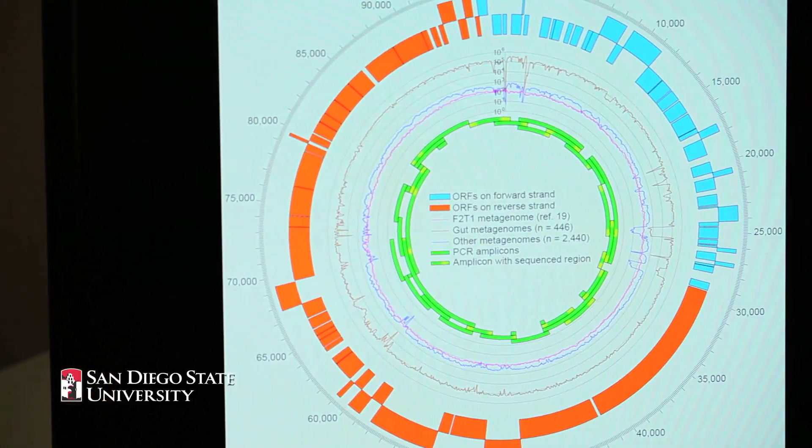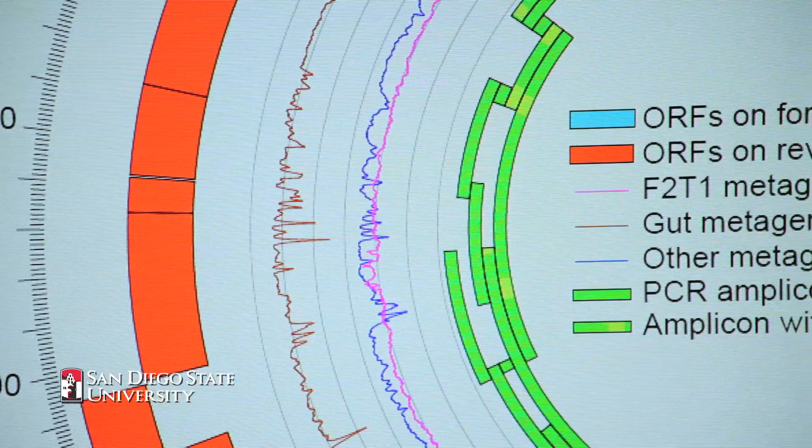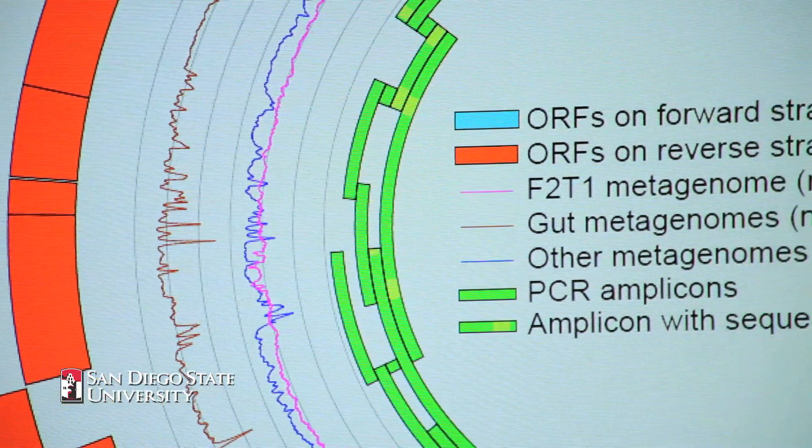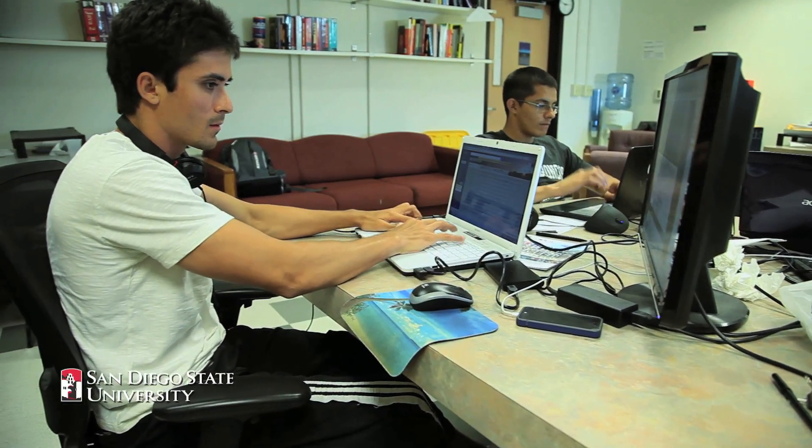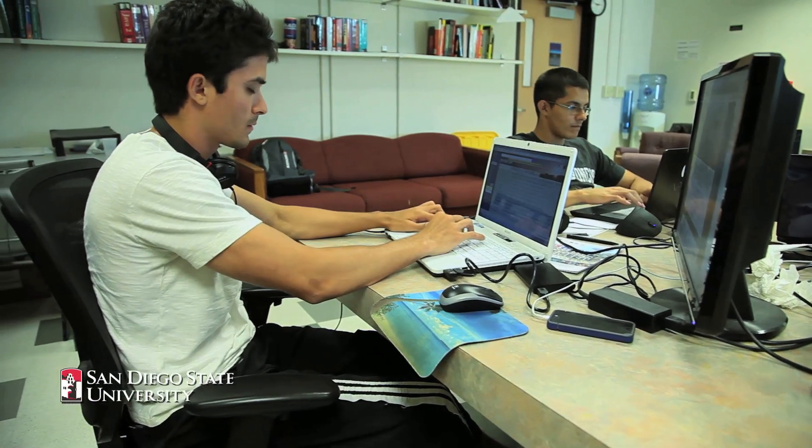This virus is targeting a bacteria called bacteroides. These bacteria are really interesting because they've been implicated in a lot of health issues. Things like obesity and diabetes are really being dramatically affected by the bacteria in our intestines in ways that we aren't yet sure about.